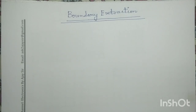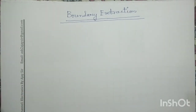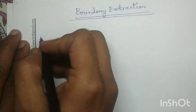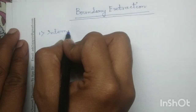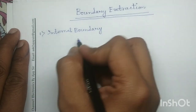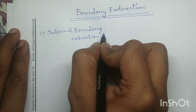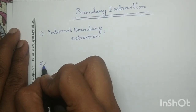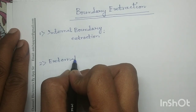Good morning all. Today we will discuss one more method in image morphological operation — boundary extraction. In boundary extraction we have to learn two things: first, internal boundary extraction, and another thing that we have to learn is external boundary extraction.